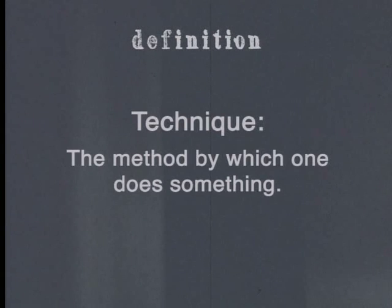Technique refers to the method in which one does something. The author must decide how she is going to tell the story. Every story must be told from a certain point of view, and the writer must decide which point of view is best for her story. The point of view is given by the narrator of the story. Deciding on the style of narration is an important decision for the author to make, as it will change the way that the readers react to the story.